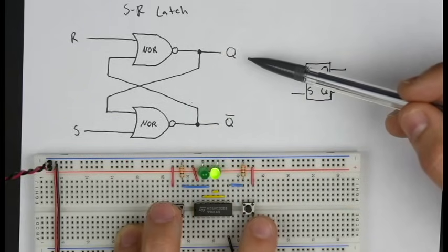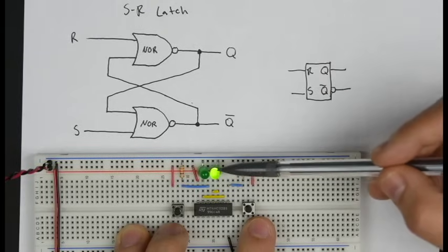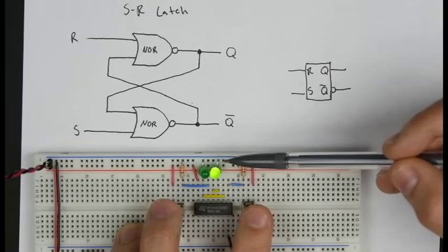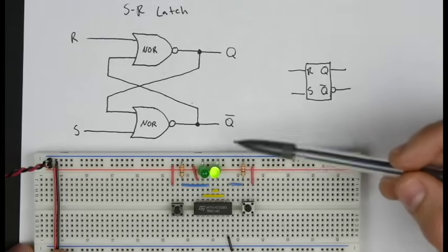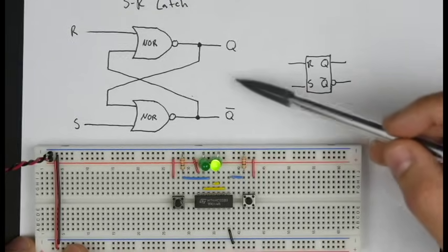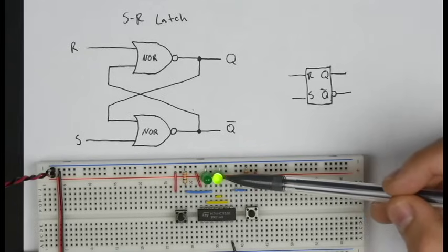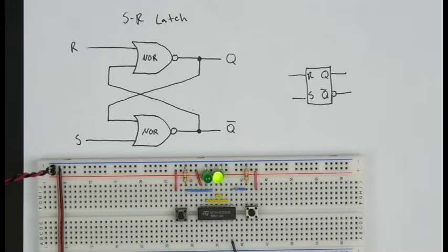If you release both inputs, it's kind of arbitrary which one comes on, because whichever one is released first wins. Generally, the latch is going to latch in one of these two states. In this video, what I want to do is talk about some modifications to this simple SR latch circuit.